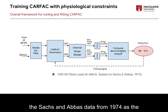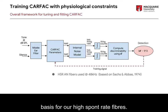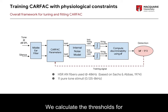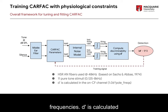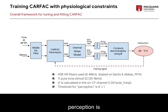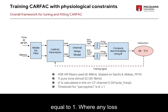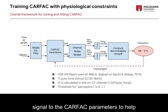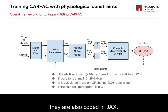We use the Sachs and Abbas statistics from 1974 as the basis for our high-spontaneous rate fibers. We calculate the thresholds for 11 pure tone stimuli at the typical PTA frequencies. The problem is calculated in on-CF fashion, where CF is calculated as 1.06 times the pole frequencies. Threshold for perception is considered to be a D-prime greater than or equal to 1, where any loss can also be returned as a training signal to the CARFAC parameters to help tune the CARFAC, or the middle ear or internal noise model, given that they are also coded in JAX.